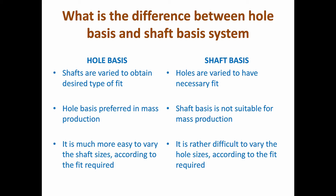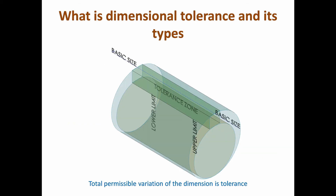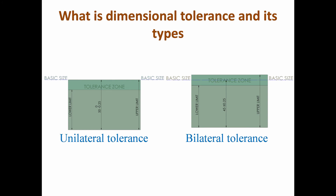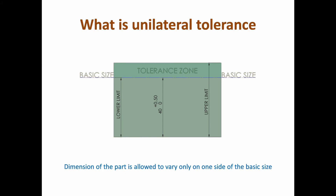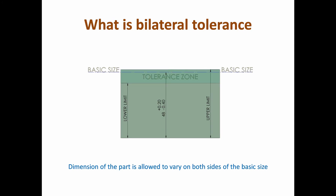It is rather difficult to vary hole sizes according to the fit required in the shaft basis system. What is dimensional tolerance and its types? The total permissible variation of a dimension is called tolerance. Types of tolerance are unilateral tolerance and bilateral tolerance. In unilateral tolerance, the dimension is allowed to vary only on one side of the basic size. In bilateral tolerance, the dimension is allowed to vary on both sides of the basic size.